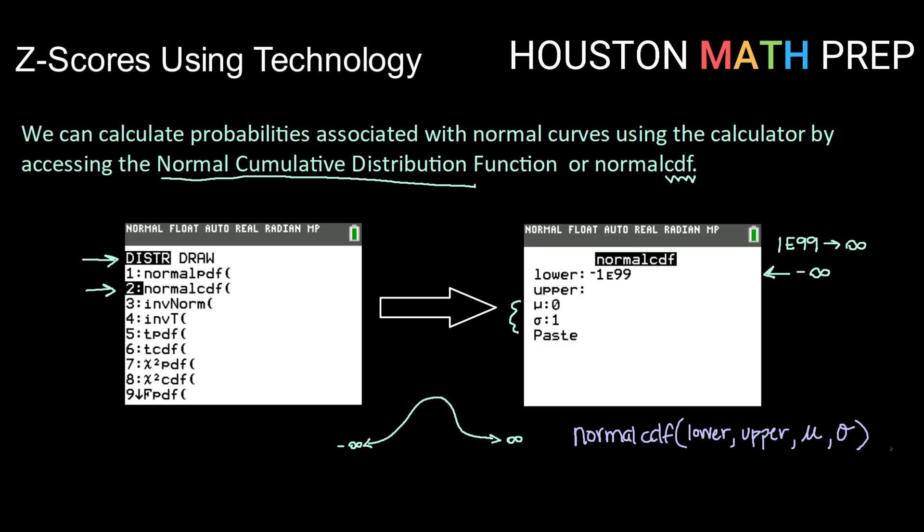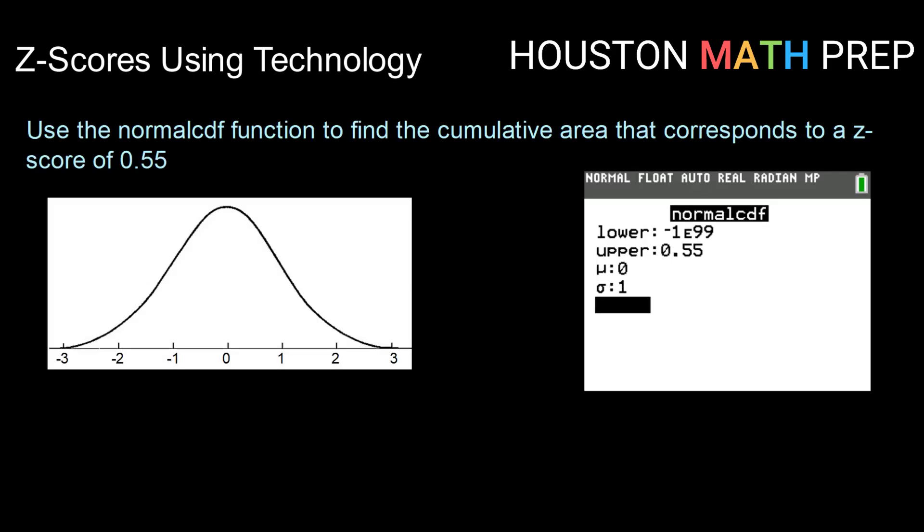Okay guys, let's see that in action. Use your normal CDF function, or if you're using a non-TI calculator, whatever function it is on your calculator, to find the cumulative area that corresponds to a z-score of 0.55. So 0.55 falls about right here, and if we're looking for falling below that or cumulative area, then we would be finding this area here.